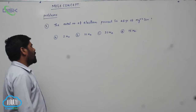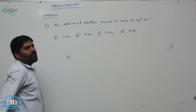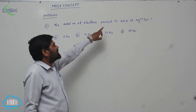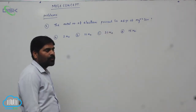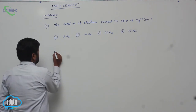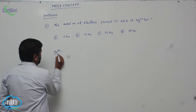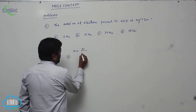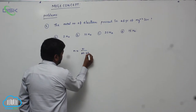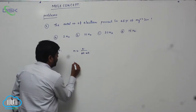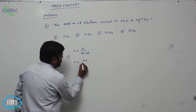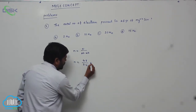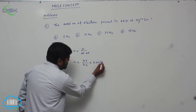Whenever this type of problem is given, the total number of electrons present in 48 grams of Magnesium plus 2 — first we calculate the number of moles. Number of moles equals weight divided by atomic weight of Magnesium Ion. So N equals 48 grams divided by atomic mass of Magnesium, which is 24.